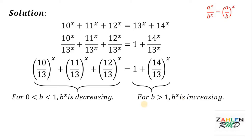Now here's a fact: a decreasing and an increasing function can only intersect once. So there is only one solution to this equation.